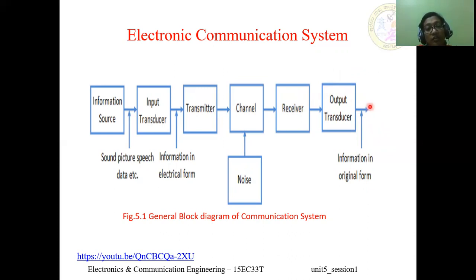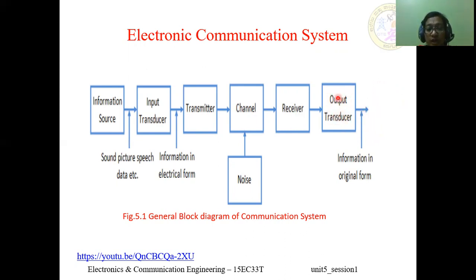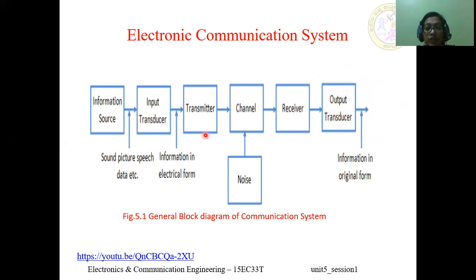At the receiver, we receive the weak signal, amplify it, and perform a demodulation or detection process to get back the original signal in electrical form. This electrical signal is then converted into a representable output form — sound, picture, speech, or data — using an output transducer, which converts electrical energy back into its original form. This is the complete electronic communication system.